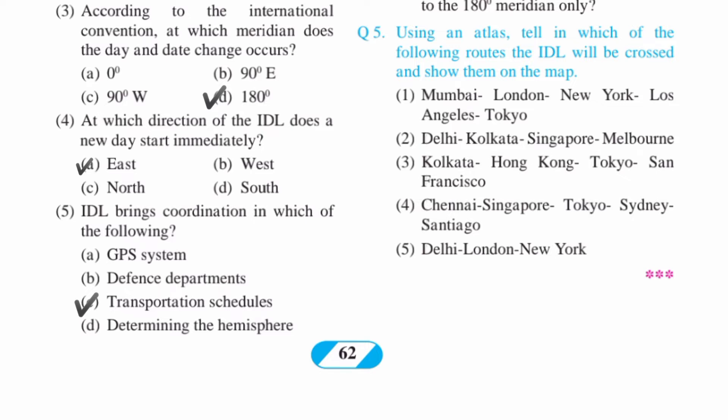Fourth: at which direction of the dateline does a new day start immediately? Answer is A: East. Fifth: the dateline brings coordination in which of the following? Answer is C: Transportation schedule.